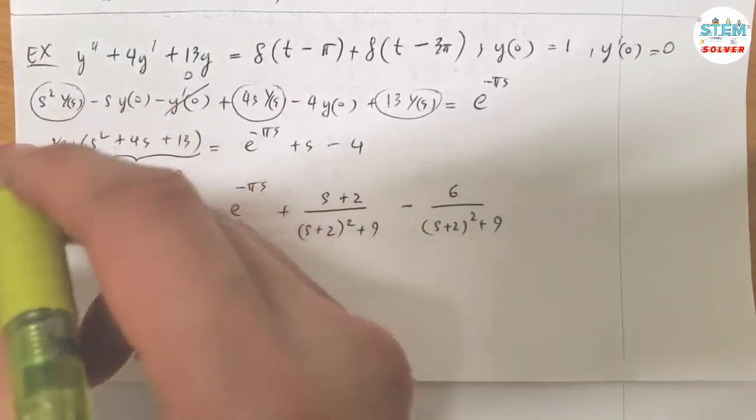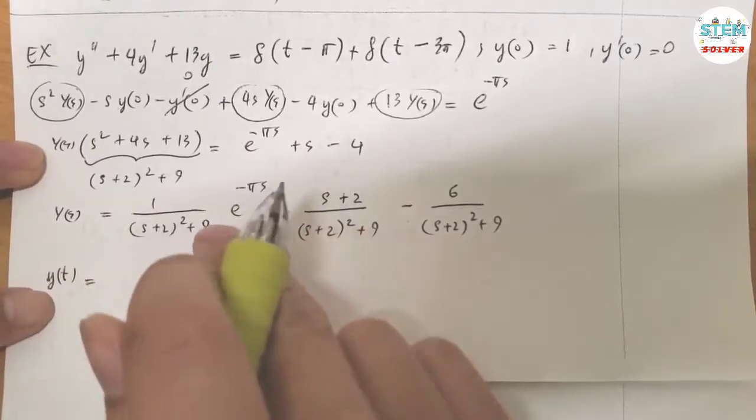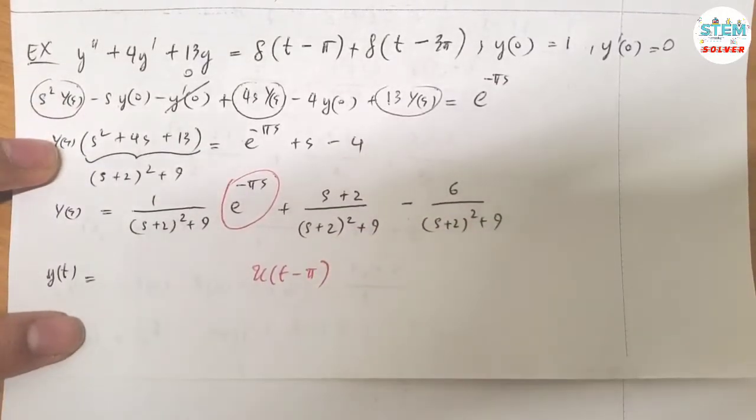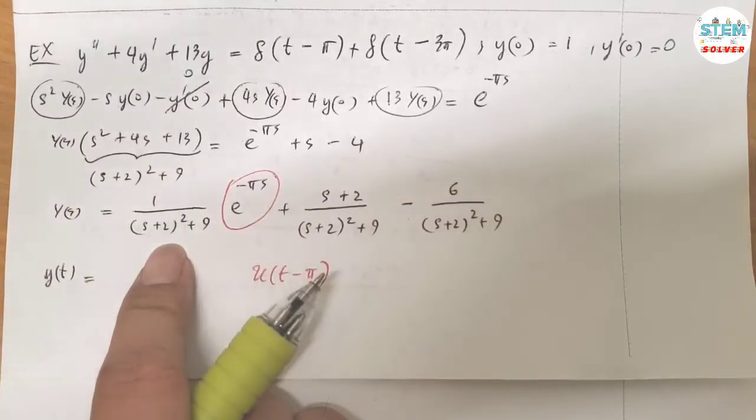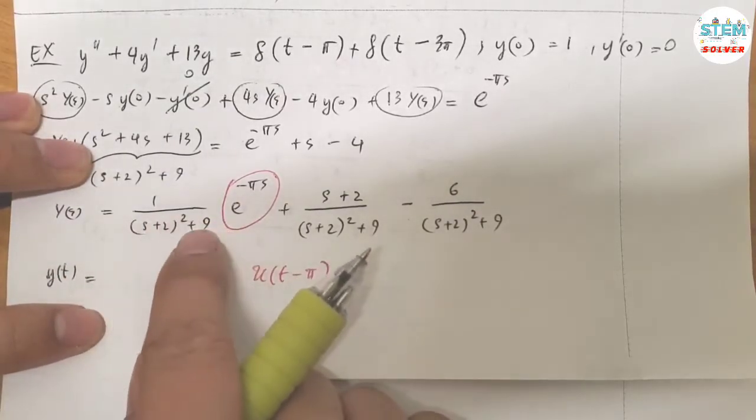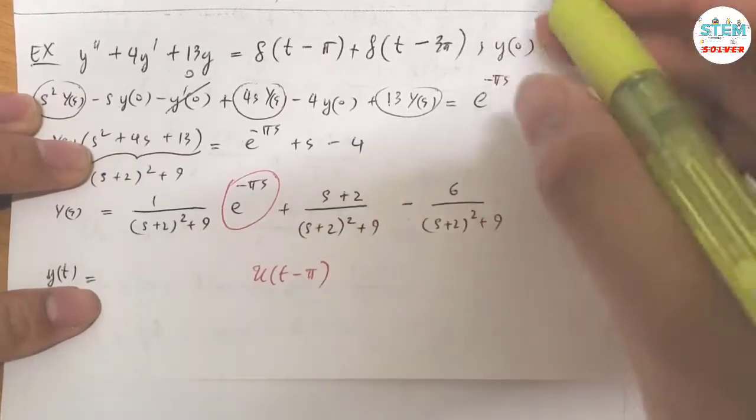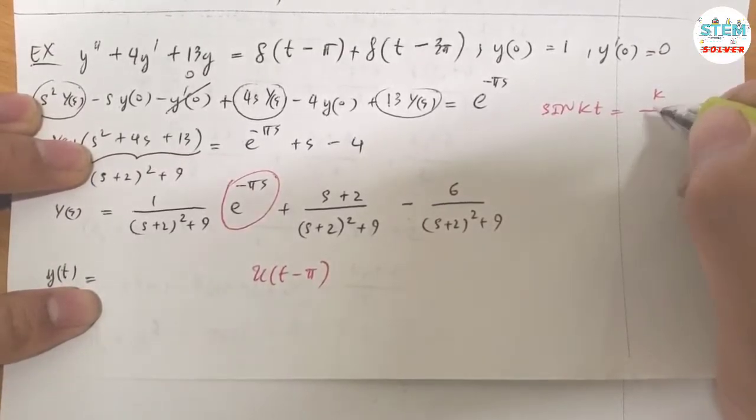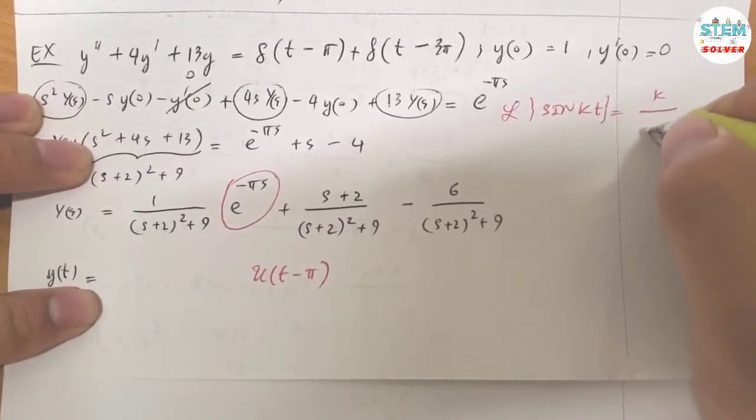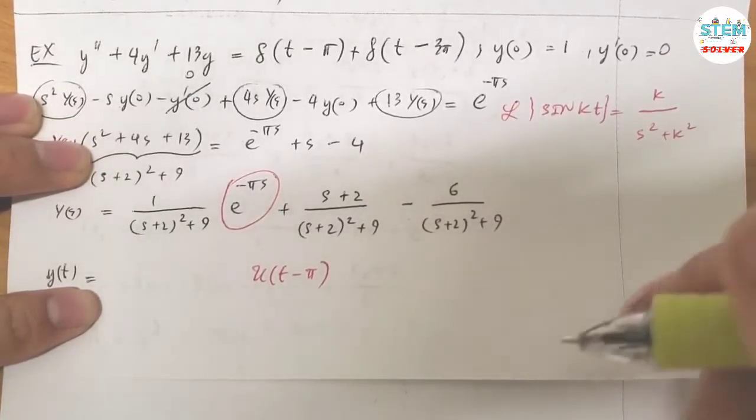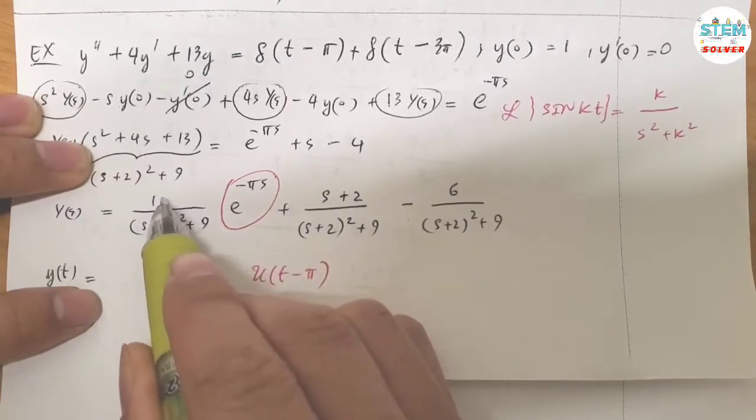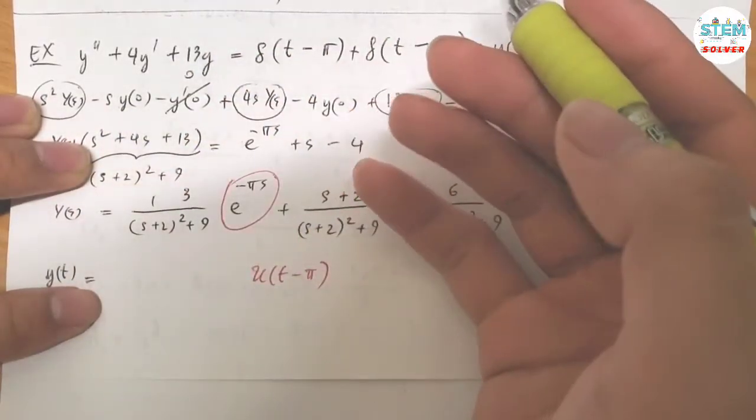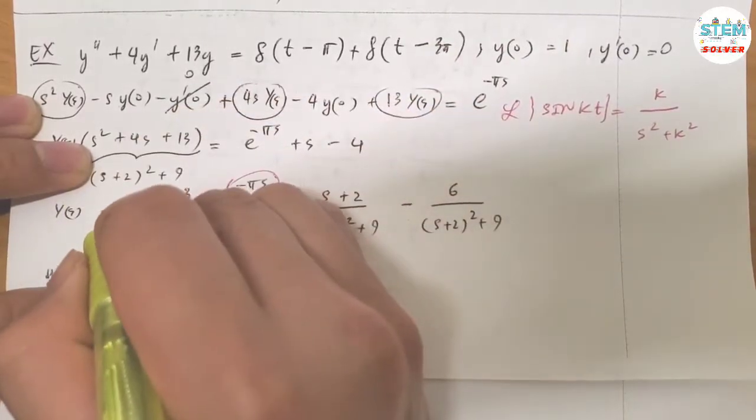Now take the inverse Laplace transform of this. For this one, work this out first. This one is going to be sine, right? Unless you have 3 on top, right? Because for sine KT, you need to have, it's going to be K over S squared plus K squared, right? So you have K squared, which is 3 squared, and you don't have 3 on top. So you need to have the 3 on top. And initially we don't have 3. So when I put the 3 on top, I need to have the 3 on the bottom.